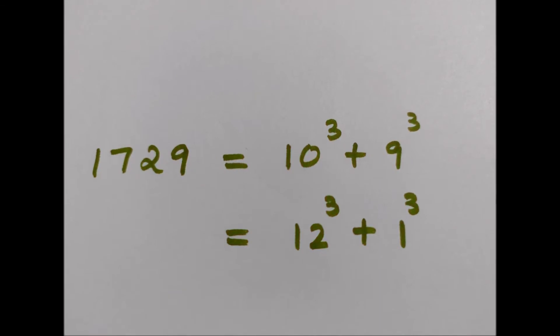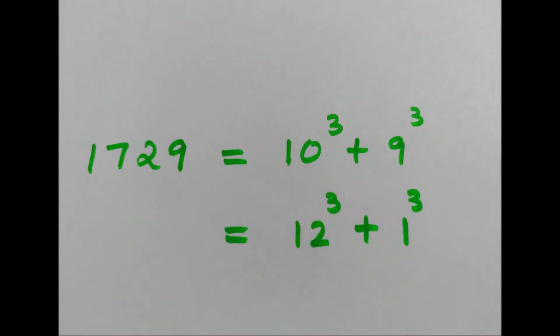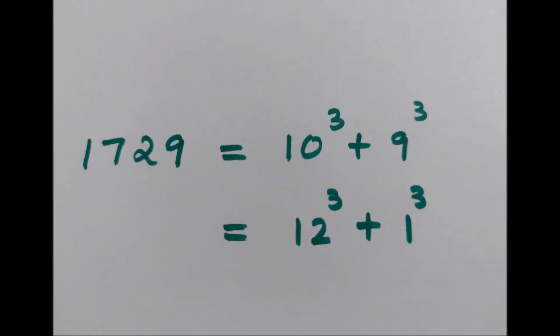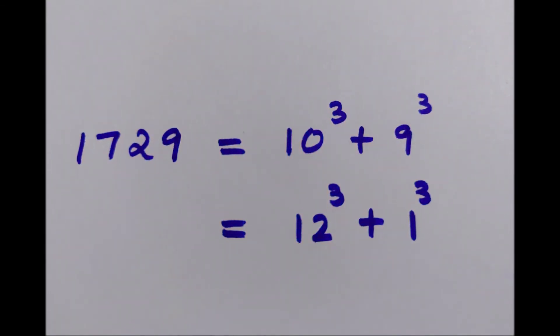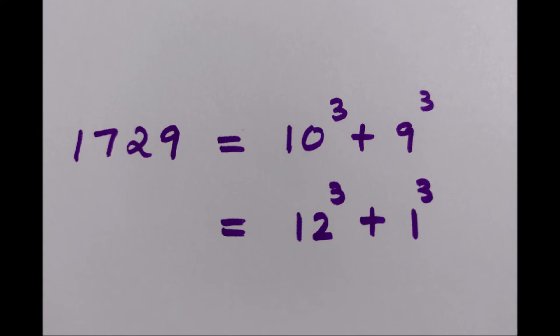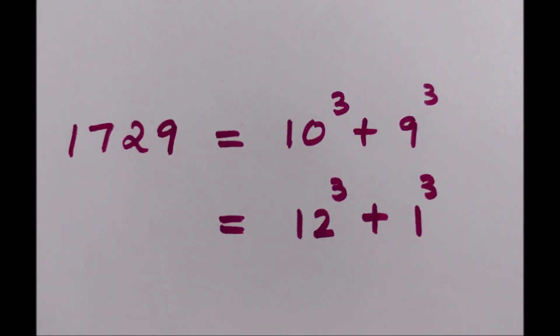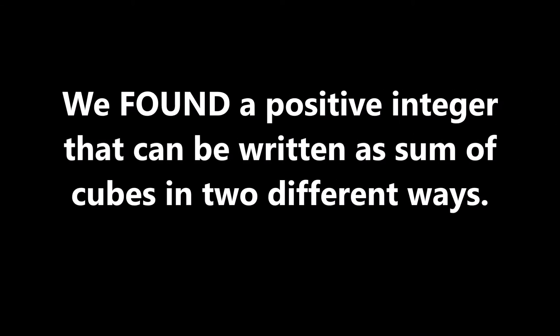The positive integer is 1729. We find that positive integer and prove that it satisfies the required property. So 1729 can be written as 10³ + 9³, and also it can be written as 12³ + 1³. So we have found a positive integer exactly which can be written as the sum of cubes of positive integers in two different ways, and that's how constructive existence proof works.